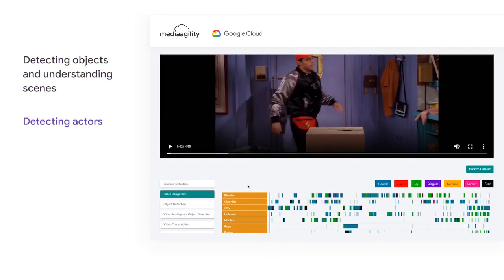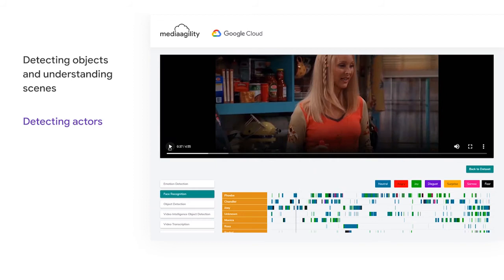Now let's focus on some specific types of detections — humans. We can determine the total duration of each actor or actress within a video and track them. We can see that several characters in the episode are detected and recognized along with their emotions in every scene.